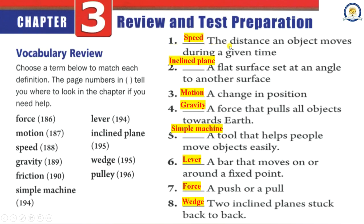1. Speed: The distance an object moves during a given time. 2. Incline plane: A flat surface set at an angle to another surface. 3. Motion: A change in position. 4. Gravity: A force that pulls all objects towards Earth. 5. Simple machine: A tool that helps people move objects easily. 6. Lever: A bar that moves on or around a fixed point. 7. Force: A push or a pull. 8. Wedge: Two incline planes stuck back to back.